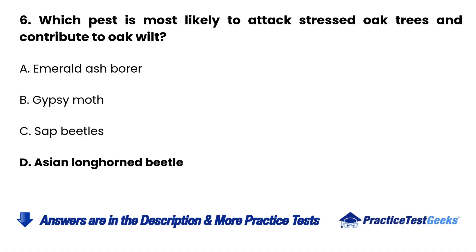Question 6. Which pest is most likely to attack stressed oak trees and contribute to oak wilt? A. Emerald ash borer. B. Gypsy moth. C. Sap beetles. D. Asian longhorned beetle.